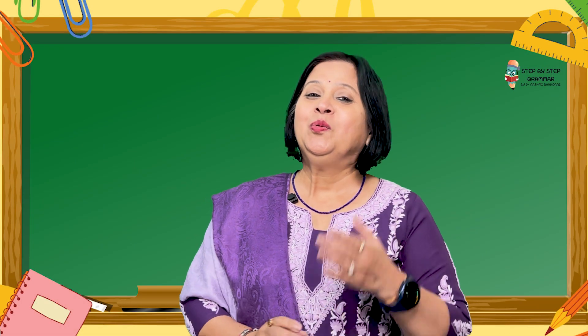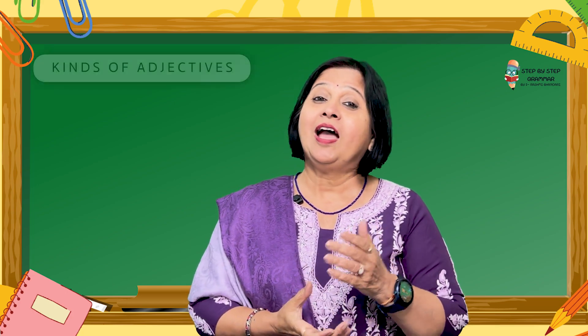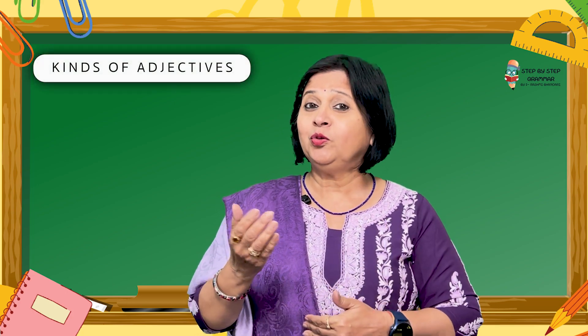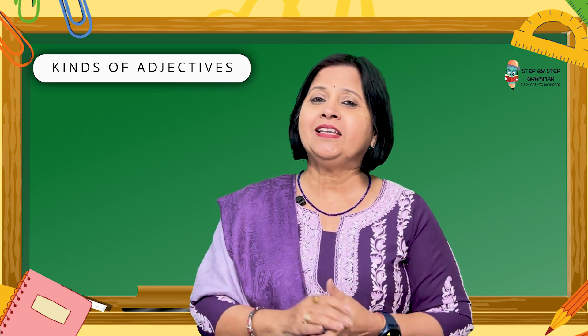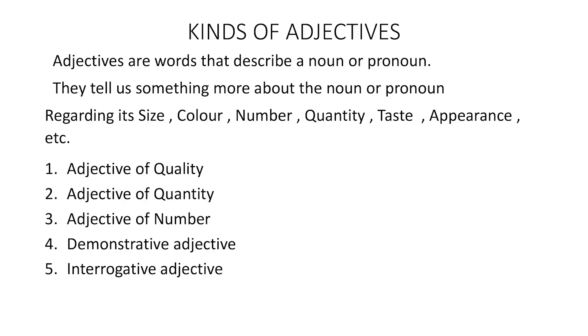Hello everyone, welcome to our new series in step-by-step grammar, wherein we shall be covering various grammar topics in less than six minutes. So let's begin. Today we are going to cover the different kinds of adjectives. Before we move into the different kinds, what is an adjective? An adjective is a word that describes a noun or a pronoun.